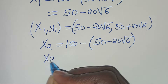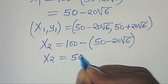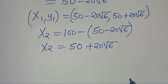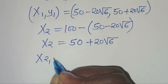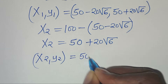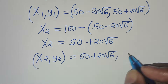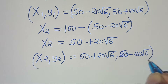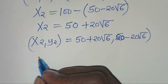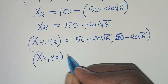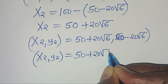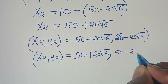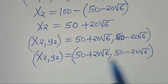So x2 equals 100 minus 50 equals 50, and minus times minus 20 square root of 6 gives plus 20 square root of 6. Therefore x2 equals 50 plus 20 square root of 6. The second solution set (x2, y2) is (50 plus 20√6, 50 minus 20√6).